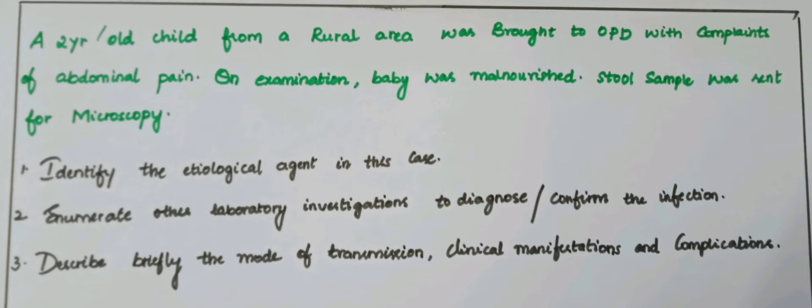Ascaris lumbricoides is the most common nematode infestation which can lead to chronic malnutrition in children. The second question: enumerate the other laboratory investigations to diagnose or confirm this infection.